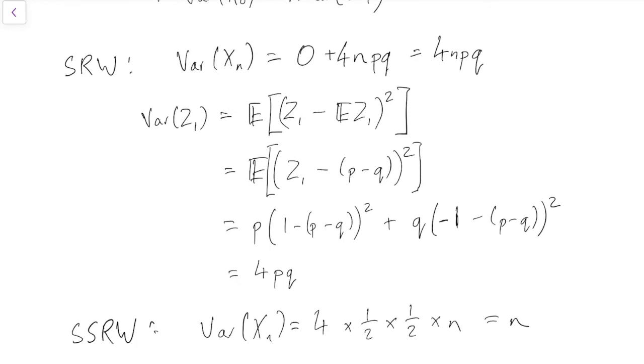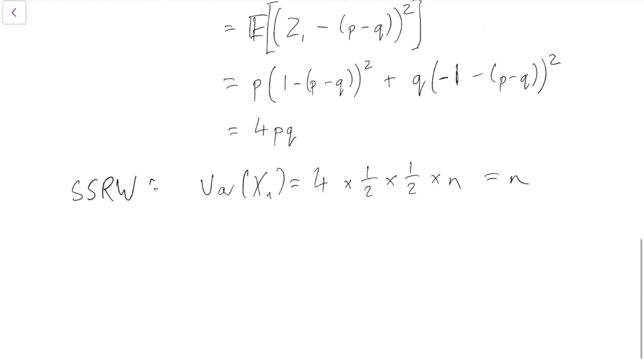Just before we finish this subsection, one last comment is that, as with a lot of random variable type things, it can sometimes be useful to do a normal approximation. Where if, for example, X0 is 0, so the expected value of Xn is μn for some μ, the variance of Xn is σ²n for some σ².